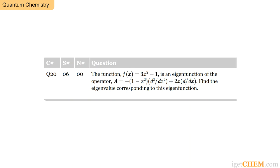This problem is another illustration of what an eigenfunction, eigenvalue, and eigenequation actually means. The problem says the function f(x) = 3x² - 1 is an eigenfunction of the operator A = -(1 - x²)(d²/dx²) + 2x(d/dx). The problem asks you to find the eigenvalue corresponding to this eigenfunction.